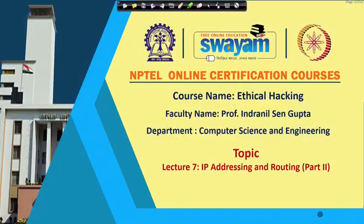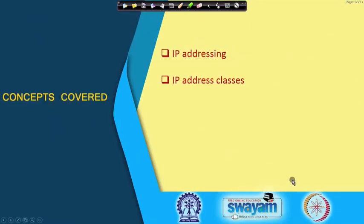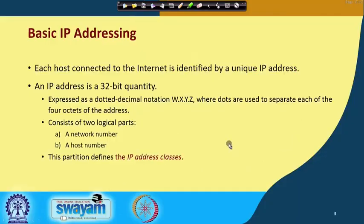Let us continue with our discussion on IP addressing and routing. If you recall in our last lecture we had talked about how packet fragmentation and reassembly happens in IP. Now in this lecture, part 2, we shall be talking about some aspects of IP addressing and the concept of IP address classes. When you talk about IP addressing, we need to understand what is the basic role of IP.